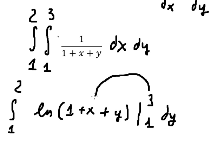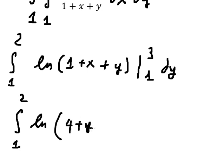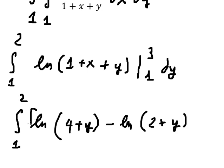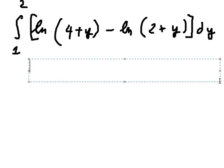So we put number three here and number one here. We have number three plus one giving number four, and number one plus one giving number two. For this one we can use integration by parts.